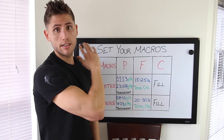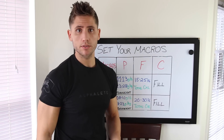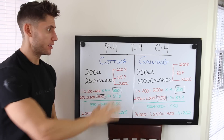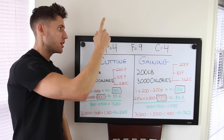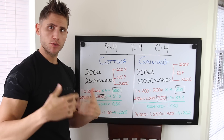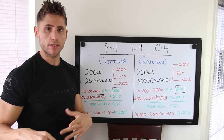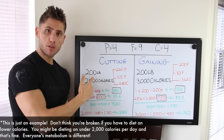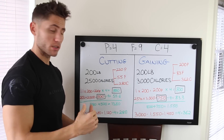Now we're going to go over two quick examples — one for cutting, one for bulking. I'm going to erase this now, hopefully you took a screenshot. Quick recap on basics: protein is 4 calories per gram, fat is 9 calories per gram, carbs are 4 calories per gram. For the cutting phase example: we typed in our stats on the calorie calculator and it told us that to be in a deficit we need to consume 2,500 calories per day. So we're a 200-pound person with a calorie intake of 2,500 calories.